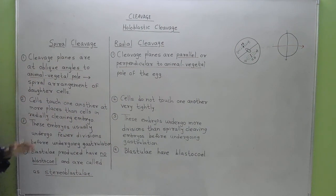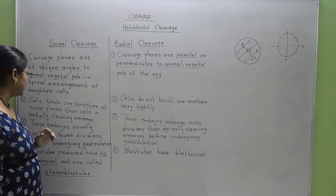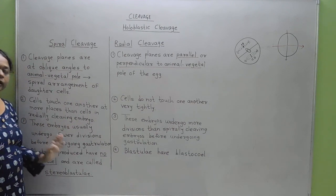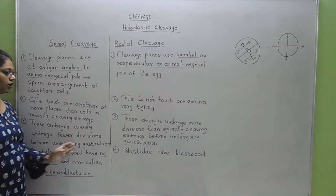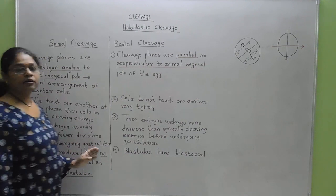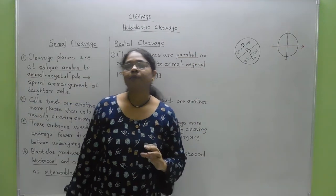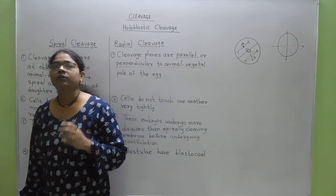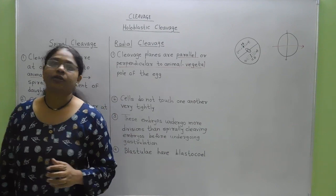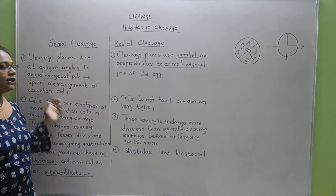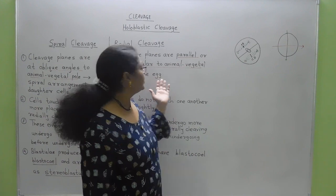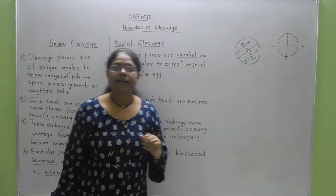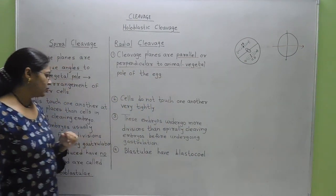The third difference is that in spirally cleaving embryos, the embryos usually undergo fewer divisions before undergoing gastrulation compared to radially cleaving embryos.